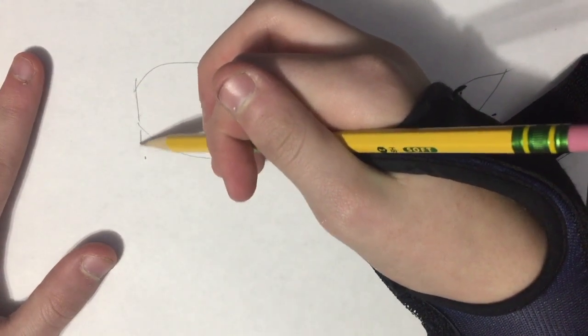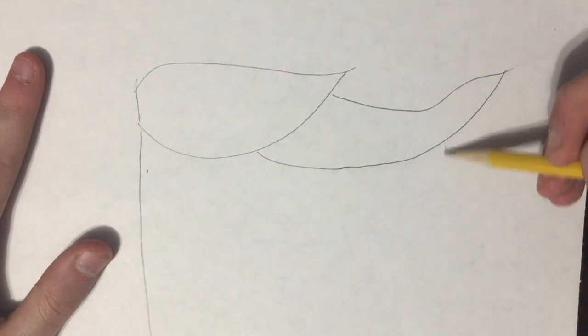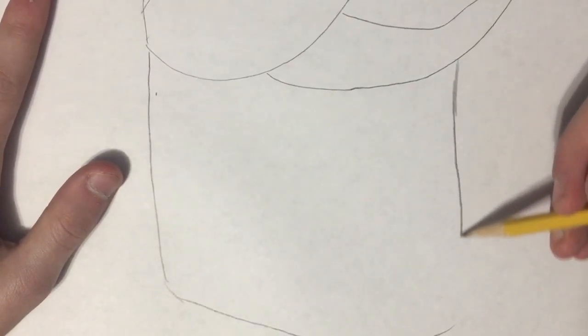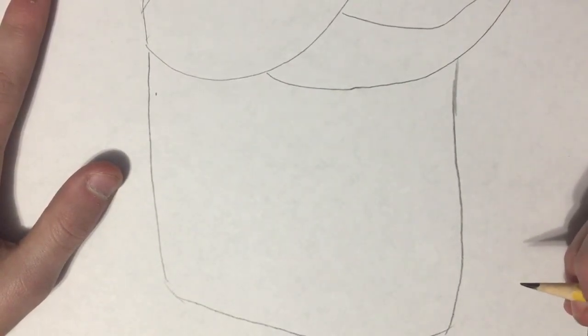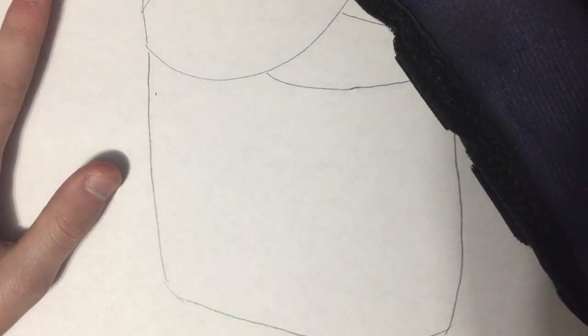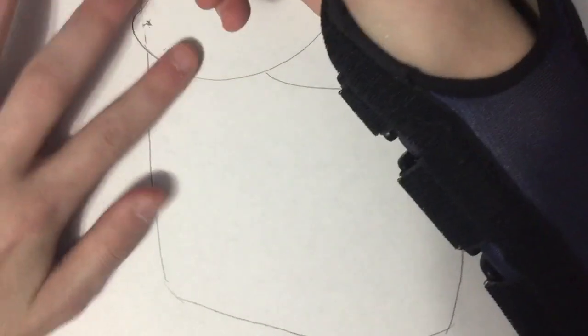Then, we add in the rest of his head. Lift the paper up. Like so. And, why not? Let's fix that. And then we'll erase that, like so.